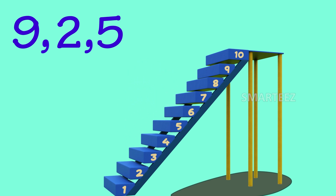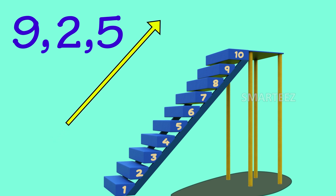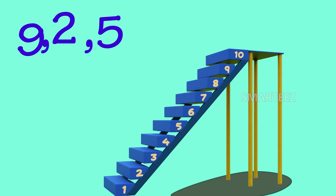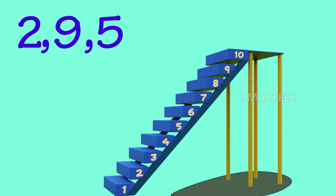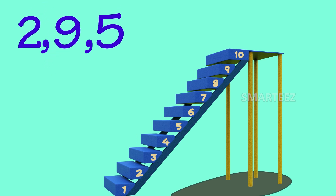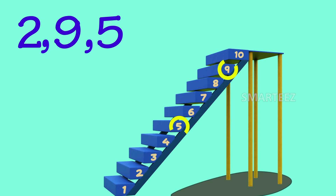But we know the jumps have to be always going up for ascending order. Let's change the order of 2 and 9 and leave the third number 5 where it is, so it will be 2, 9 and 5.